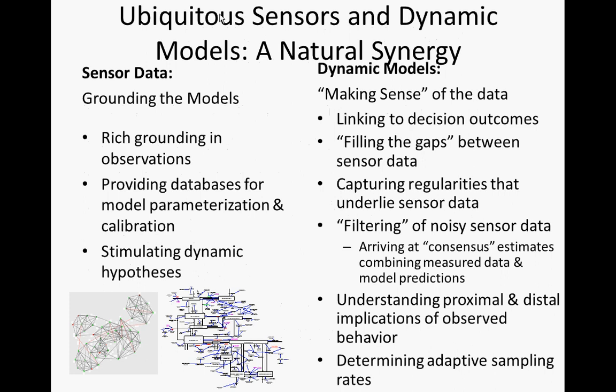I began my talk by motivating this work through the needs of models. There's a natural bidirectional synergy between the use of sensor data on the one hand and dynamic models on the other. Dynamic models can make strong use of this data and link it to decision-making, but those models also help us filter the data, clean out noise, capture regularities, fill gaps between data points, and understand the proximal and distal implications of observed behavior.